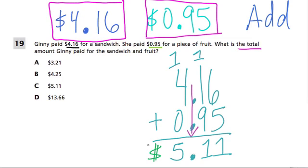And this dollar sign could have two or one lines going through it. But here, the answer is C, $5.11. All right, thanks.